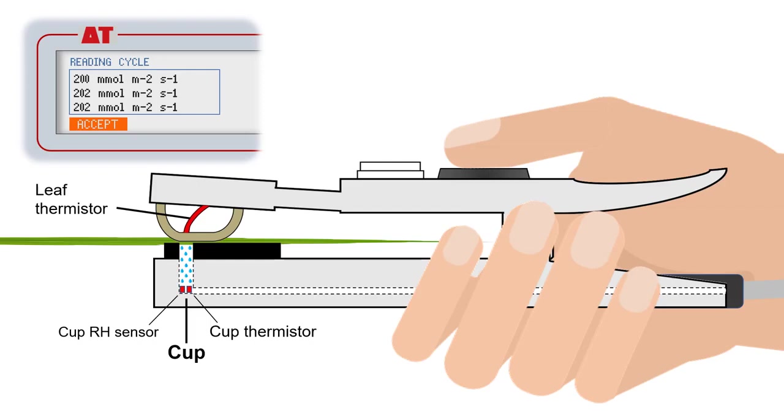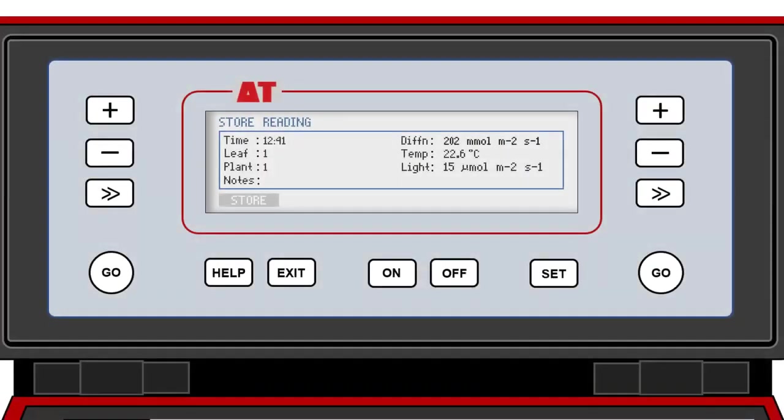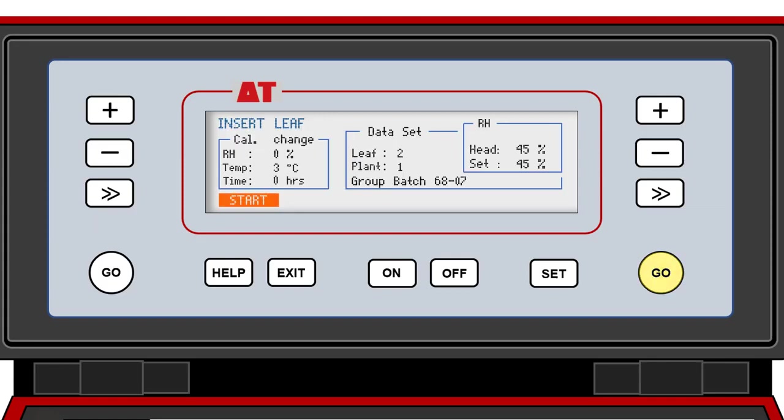Once accepted, the user stores the reading by pressing the Go button. Text notes can be added with the full-size keyboard. Pressing the button again enables the user to start measurement on another leaf.